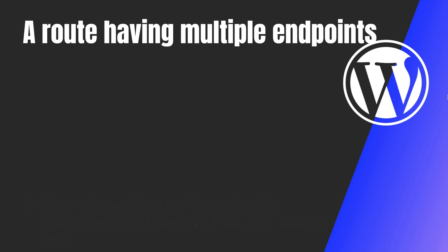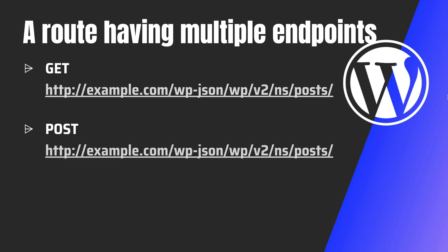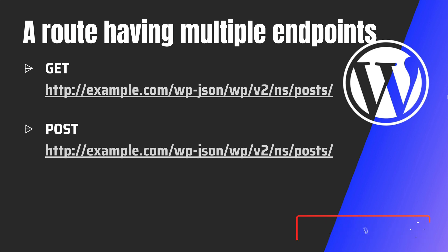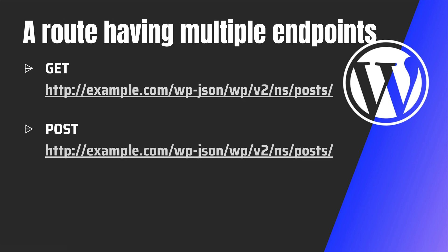A route can also support PUT and DELETE as well. For example, consider the endpoint example.com/wp-json/wp/v2/posts — you can see it's the same URL, but one request is a GET request and the other is a POST request. Even though the URL is the same, the type of the request is different, which means a route can have multiple endpoints — a GET endpoint as well as a POST endpoint.